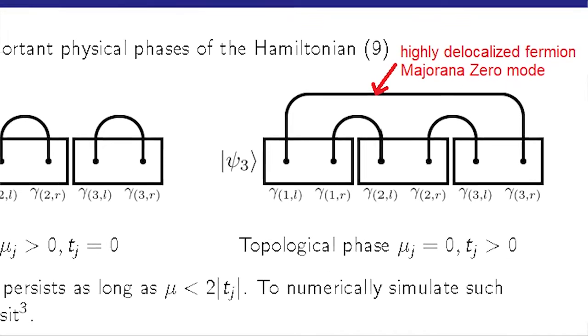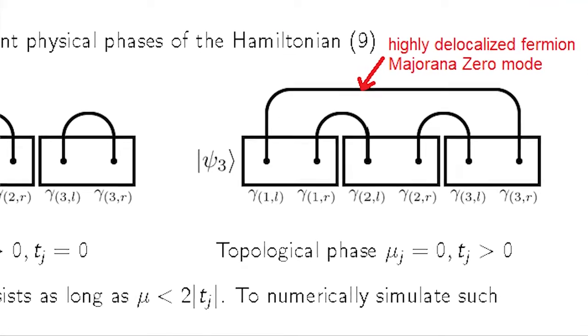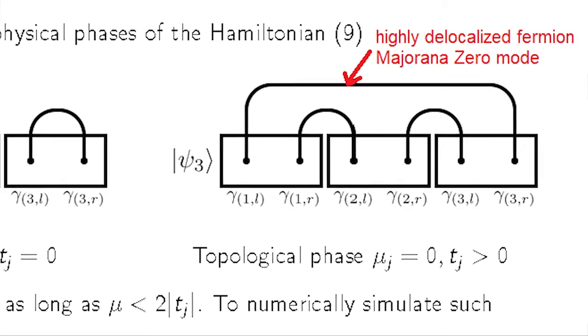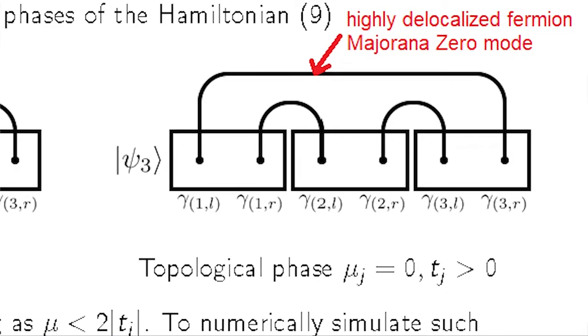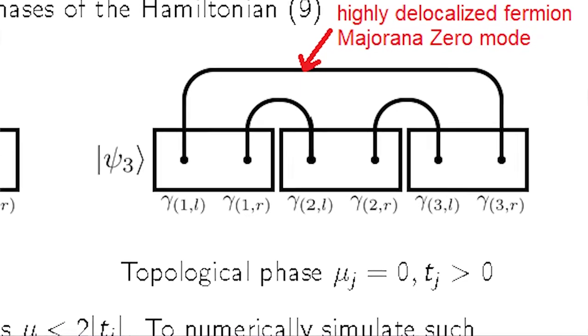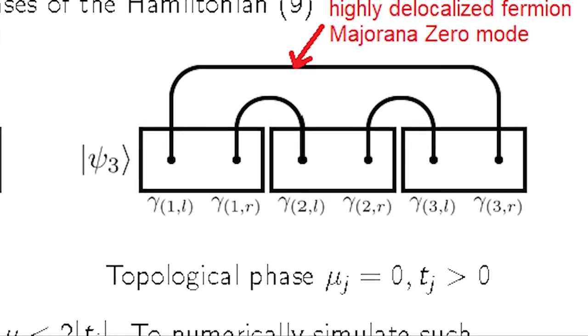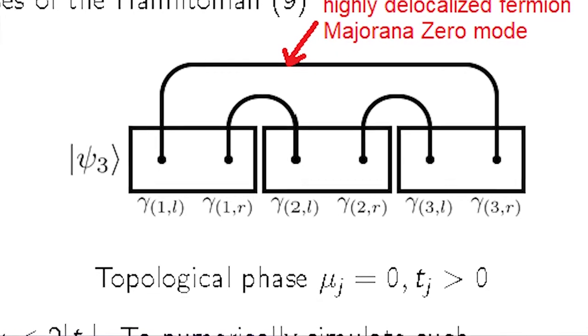And there is a special fermion, which is highly delocalized between two of the furthermost sites. And that's the topological phase. And the topological phase persists as long as the on-site energy potential mu is strictly less than two electron hopping.